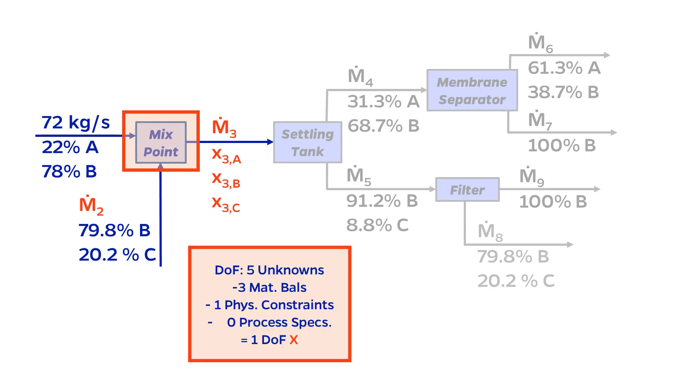Looking at the degrees of freedom for the mix point, there are five unknowns: M2, M3, and the three x3 variables. There are three material balances because there are three components A, B, and C, and also a physical constraint. This adds up to one degree of freedom, so I cannot solve this system just yet.